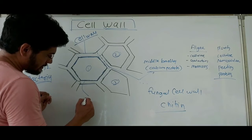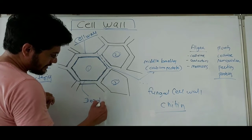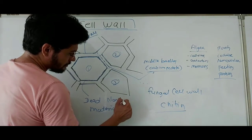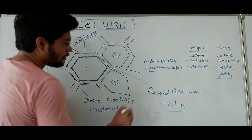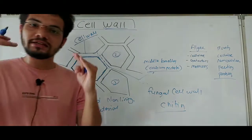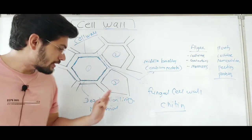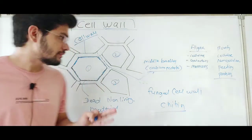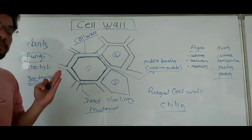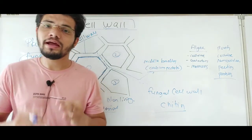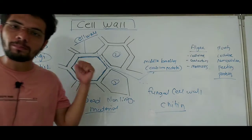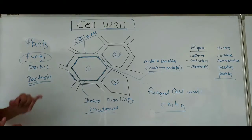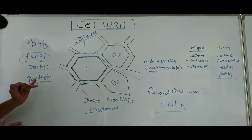One important point: the cell wall is considered a dead material or non-living structure. We have studied that the plasma membrane is a living structure, but the cell wall is a non-living structure present outside the plasma membrane — made up mainly of cellulose in plants and chitin in fungi.